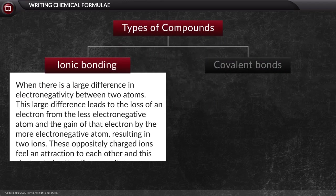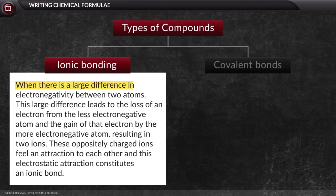Ionic bonding occurs when there is a large difference in electronegativity between two atoms. This large difference leads to the loss of an electron from the less electronegative atom and the gain of that electron by the more electronegative atom, resulting in two ions. These oppositely charged ions feel an attraction to each other, and this electrostatic attraction constitutes an ionic bond.